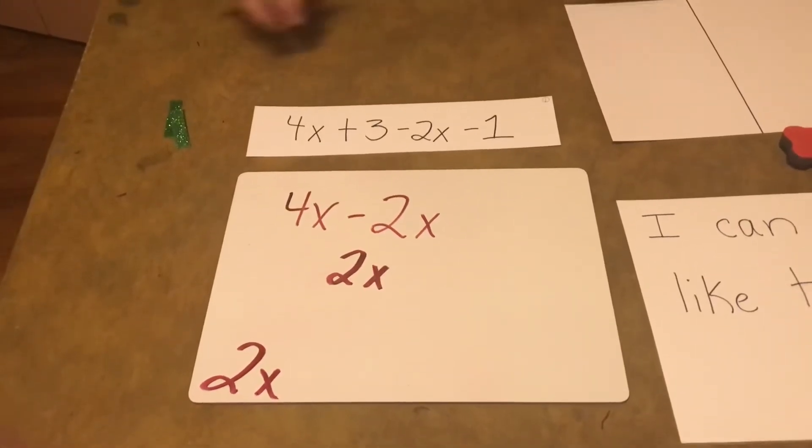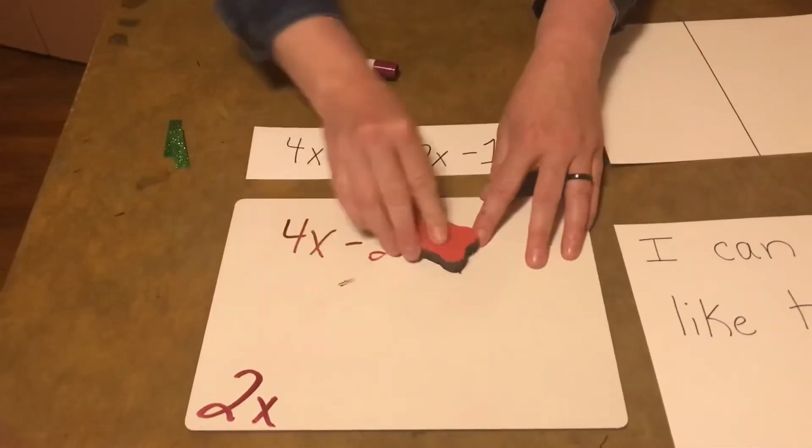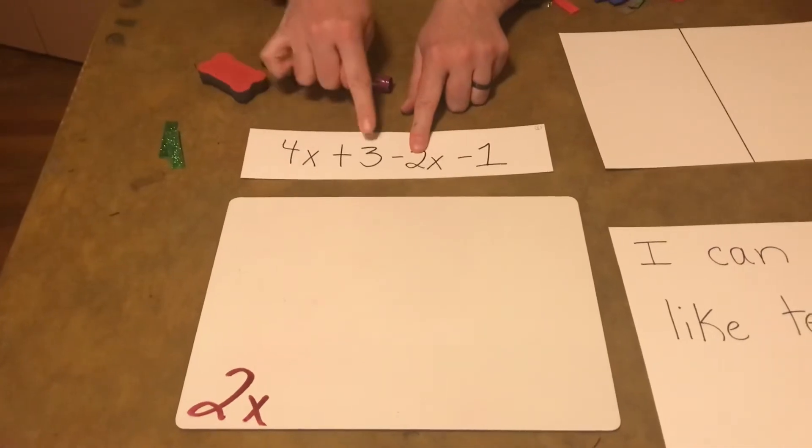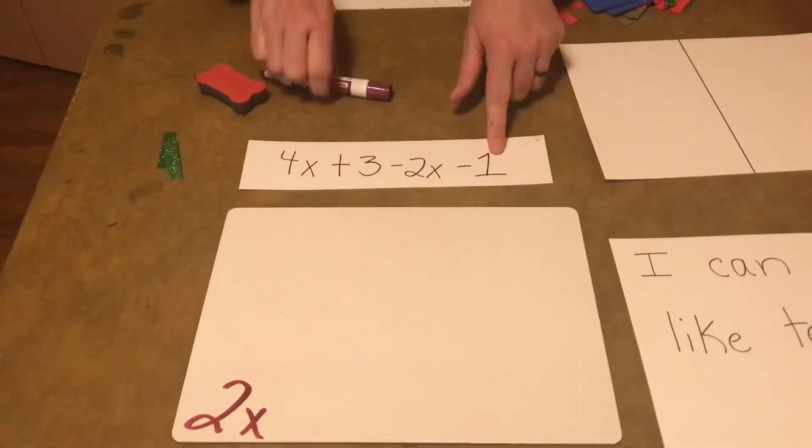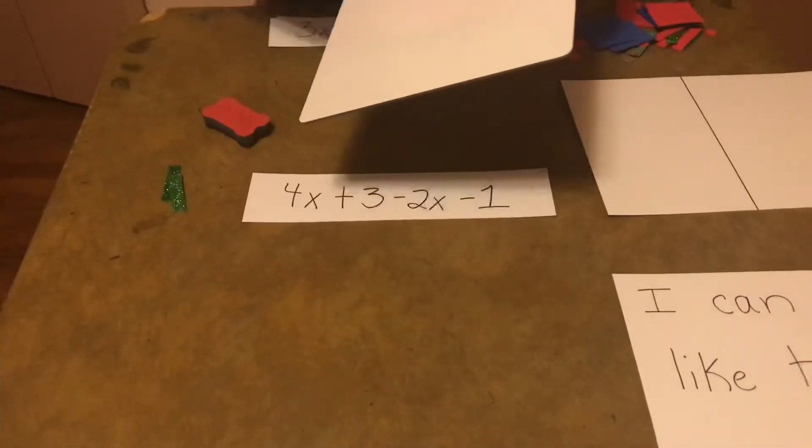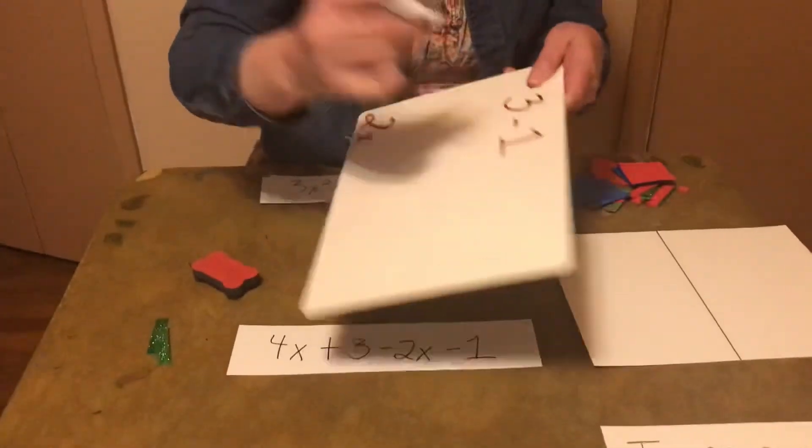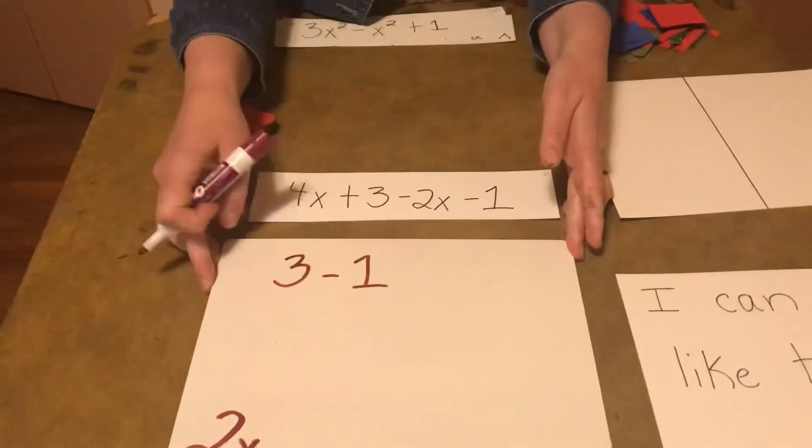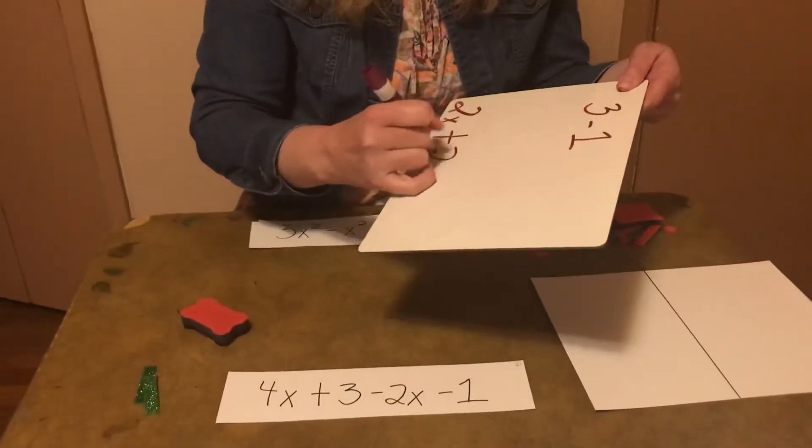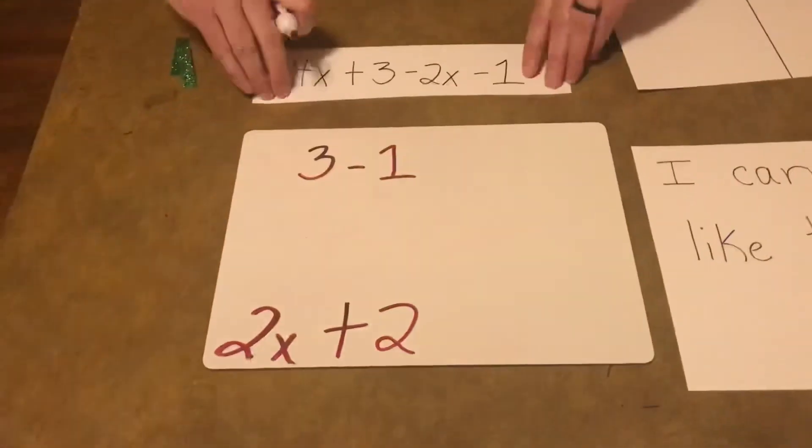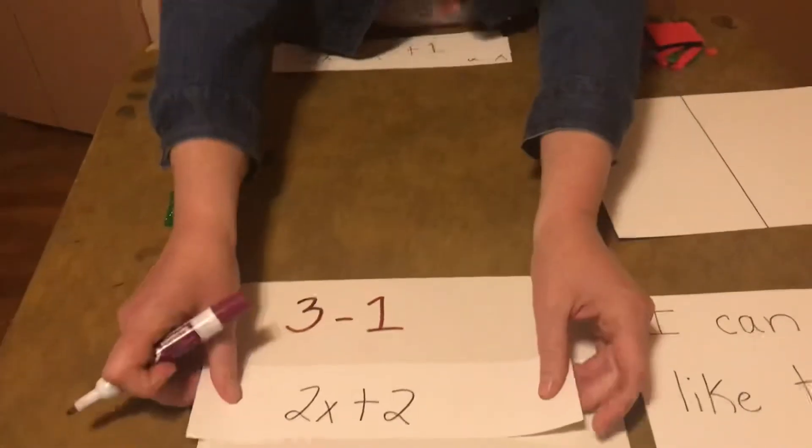And then let's do the other one. So we've already used these. Now we have a 3 minus 1, and we're amazing at this. We're going to combine our numbers. We've been doing this since kindergarten. 3 minus 1 is 2. So 2X plus 2. And let's see how we did. Awesome. We did it.